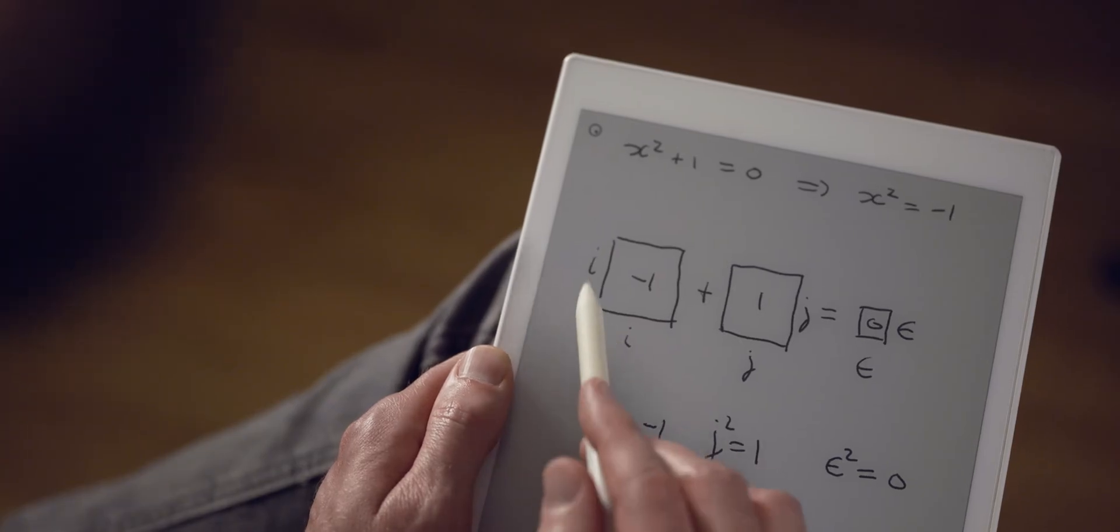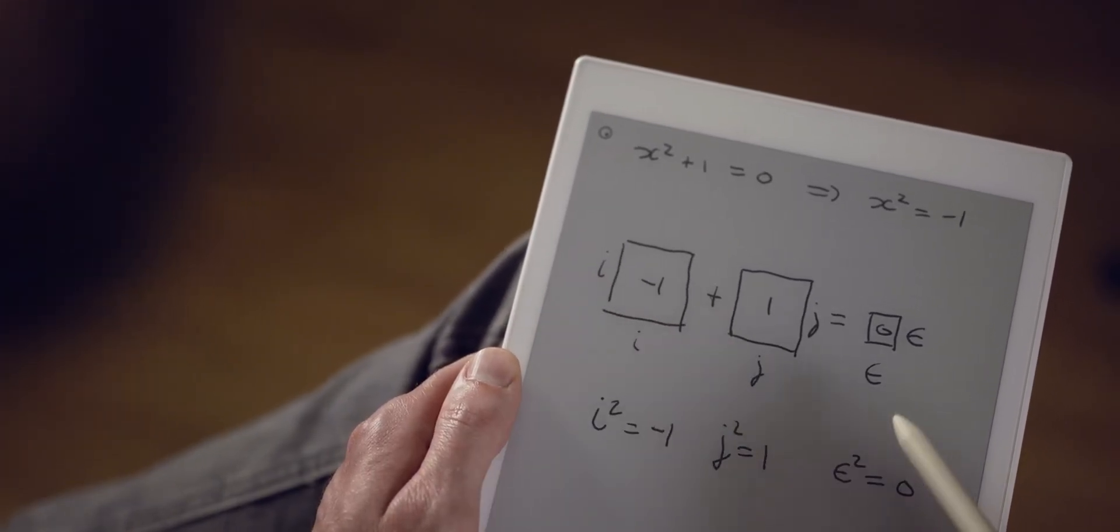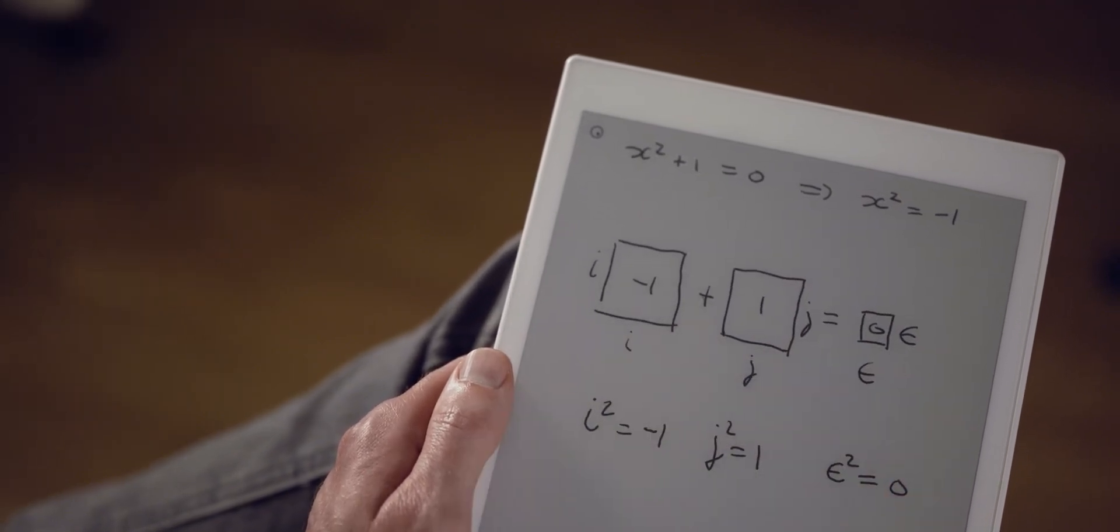So we now know that i times i will give negative one and j times j will give plus one. But what happens when I take an i times a j? This will be the topic of the next video: what happens when we start multiplying these things together? Unfortunately, I don't have time for that in this video. So I hope you will join me for the next video. Please consider subscribing to this channel, and thank you very much for watching.